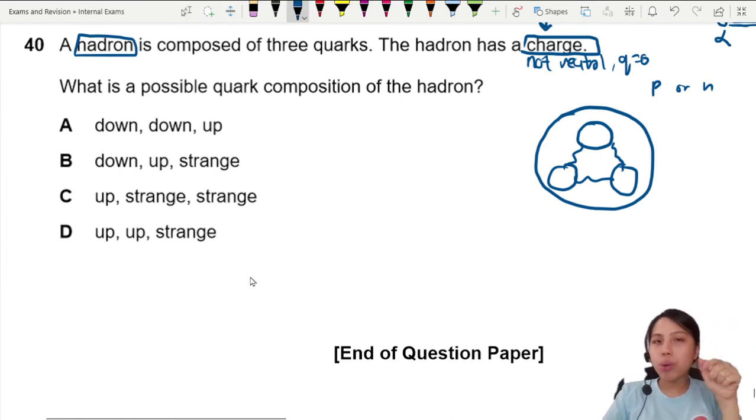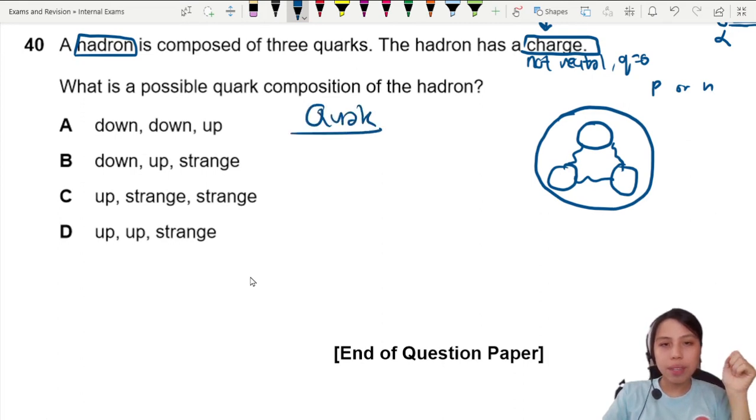You need to know what is the individual quark composition. So the quark list that we have here is up, down, charm, strange. Up and down, by the way, the charge is two over three positive.